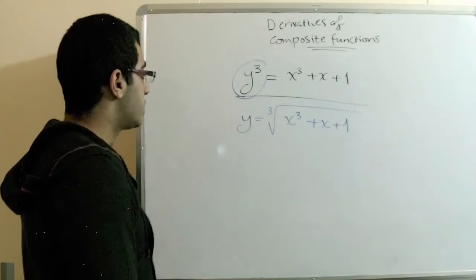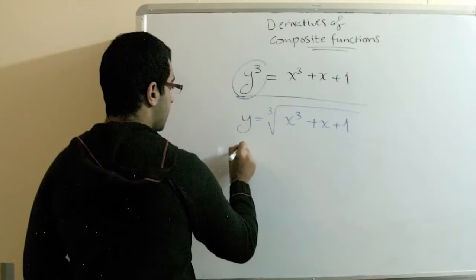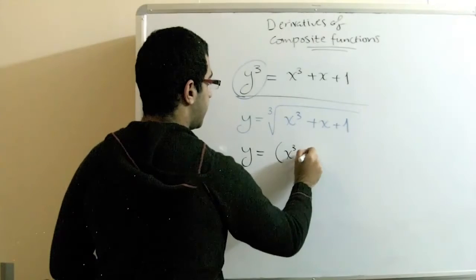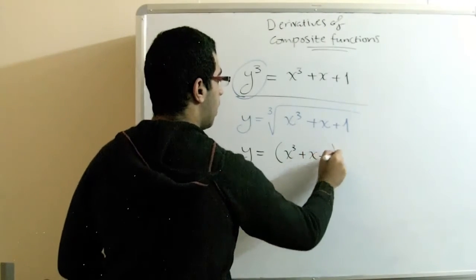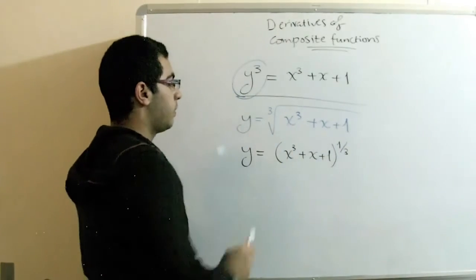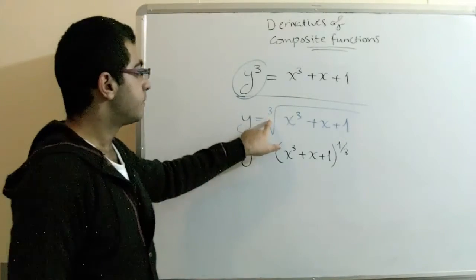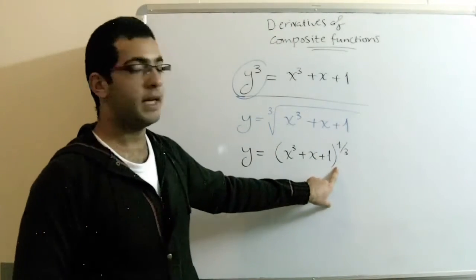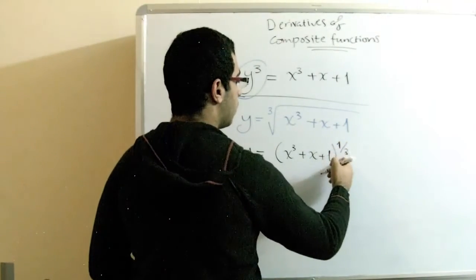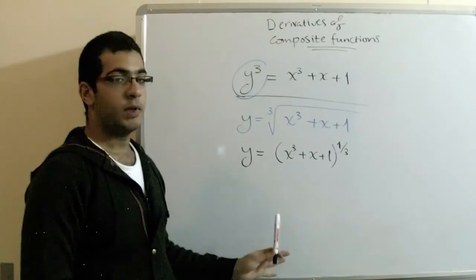We can put our function in the form we have just mentioned by writing this power in a different way. So we can write y equal to x to the power 3 plus x plus 1, all of power one-third. Because a power of one-third equals a cubic root — any root can be written as a fraction: 1 over the root number. So this is 1 over 3, and we can now simply get the derivative.